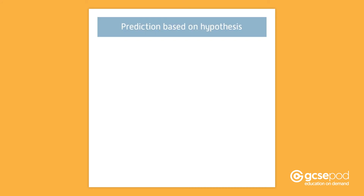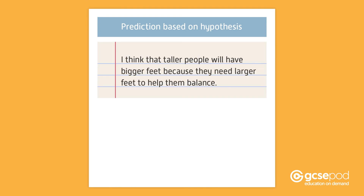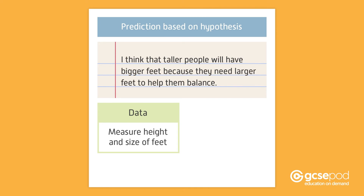You would then write a prediction based on your hypothesis. For example, I think that taller people will have bigger feet because they need larger feet to help them balance. You then need to consider what data to collect. If you want to investigate if taller people have bigger feet, you will need to measure people's height and the size of their feet.